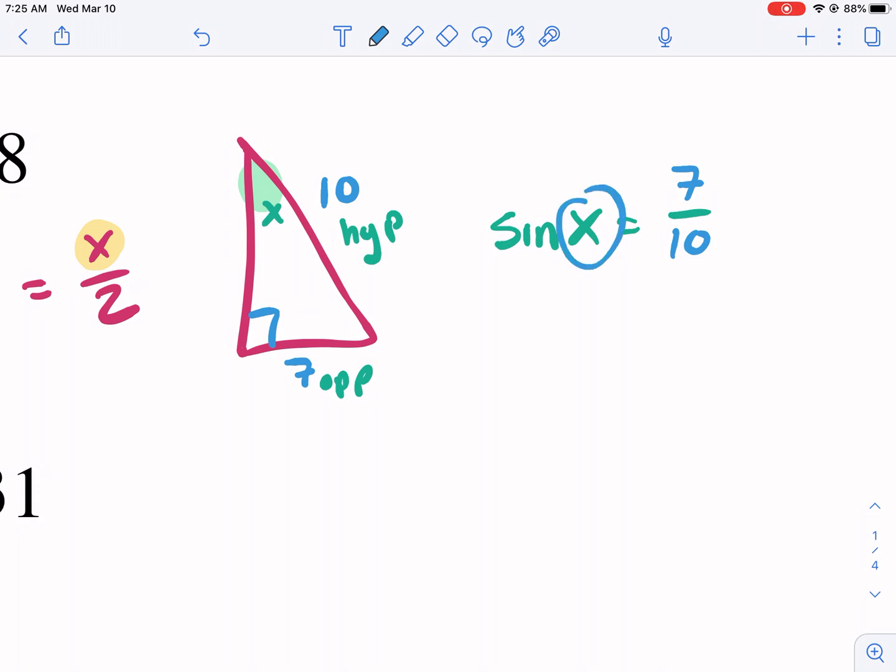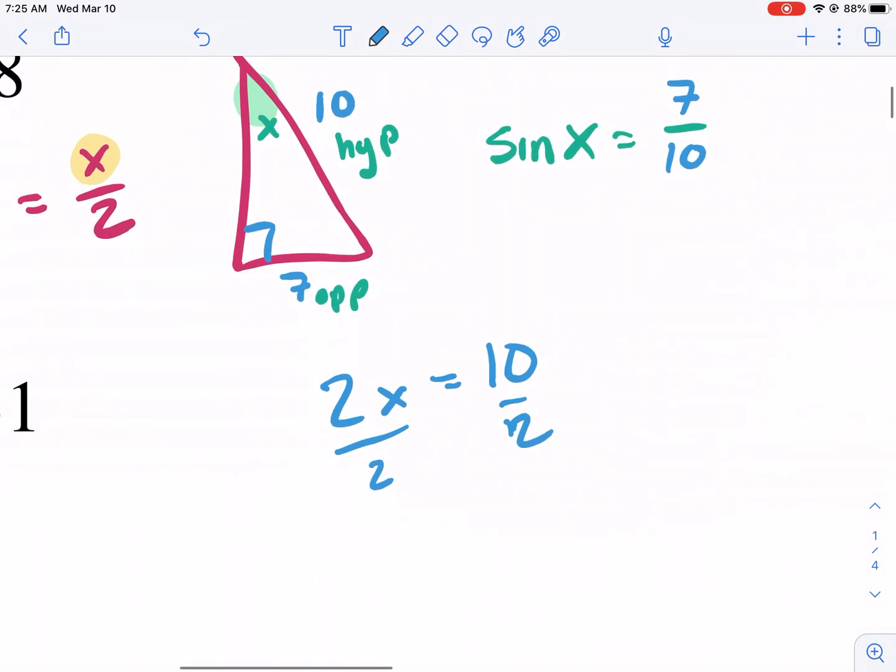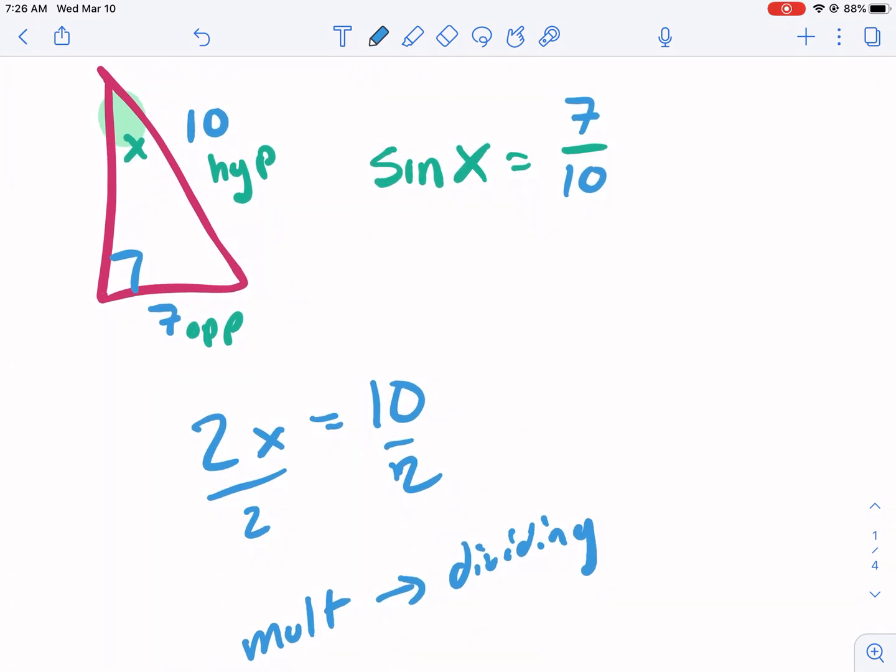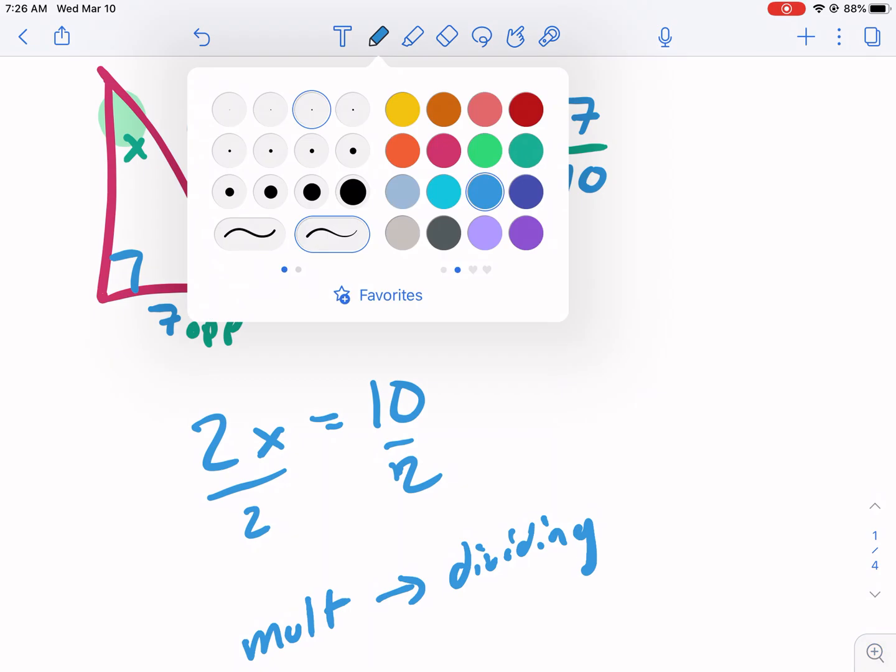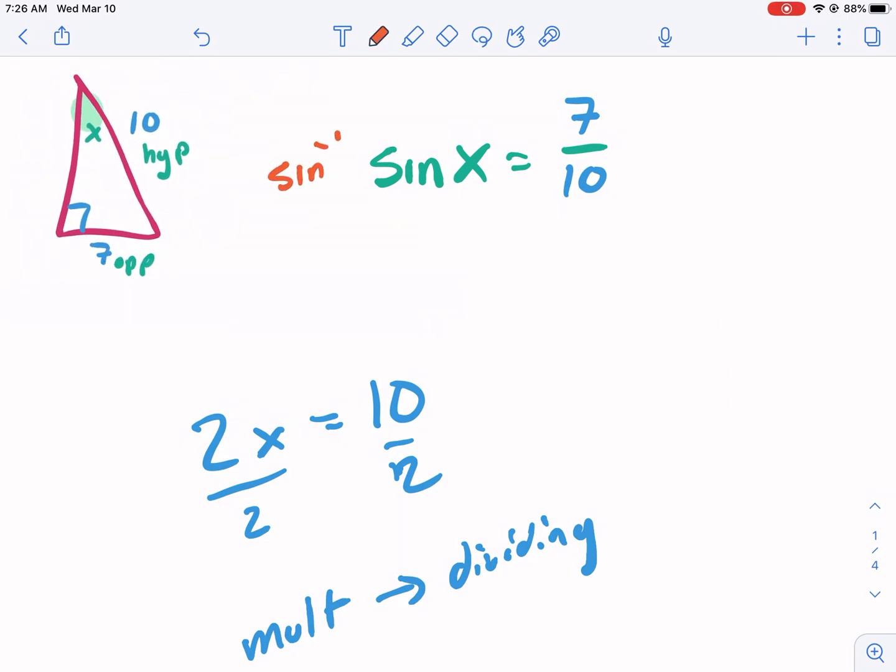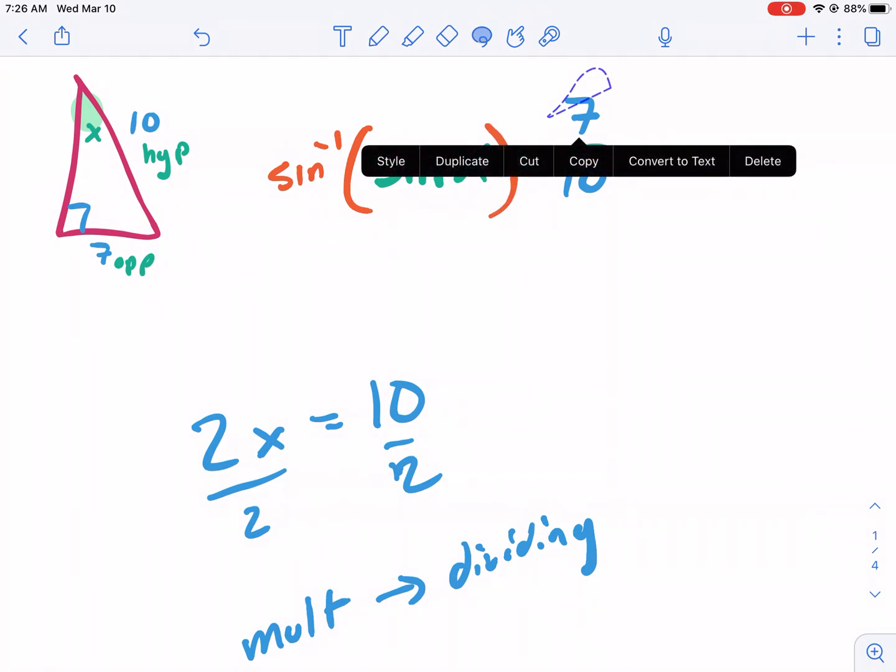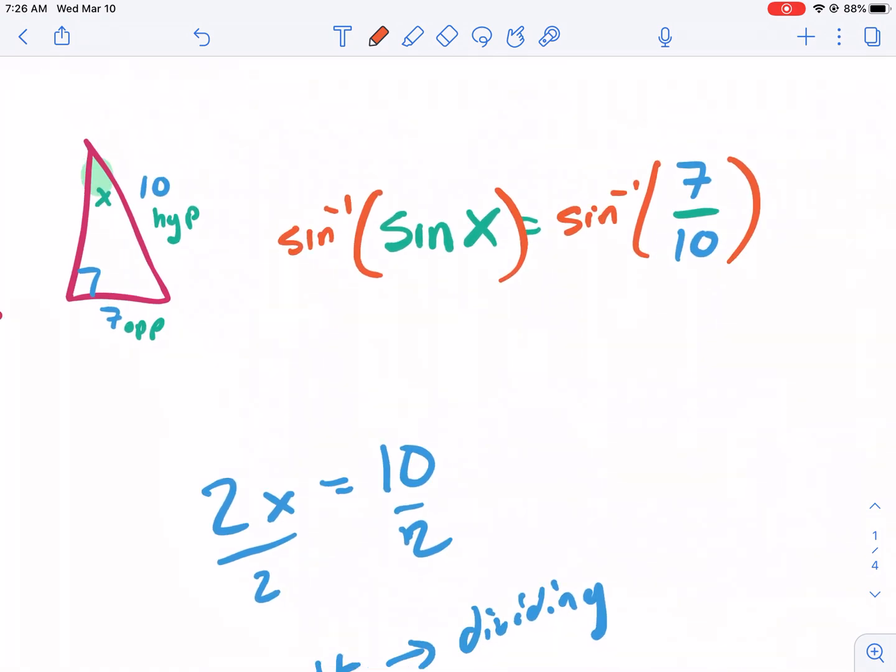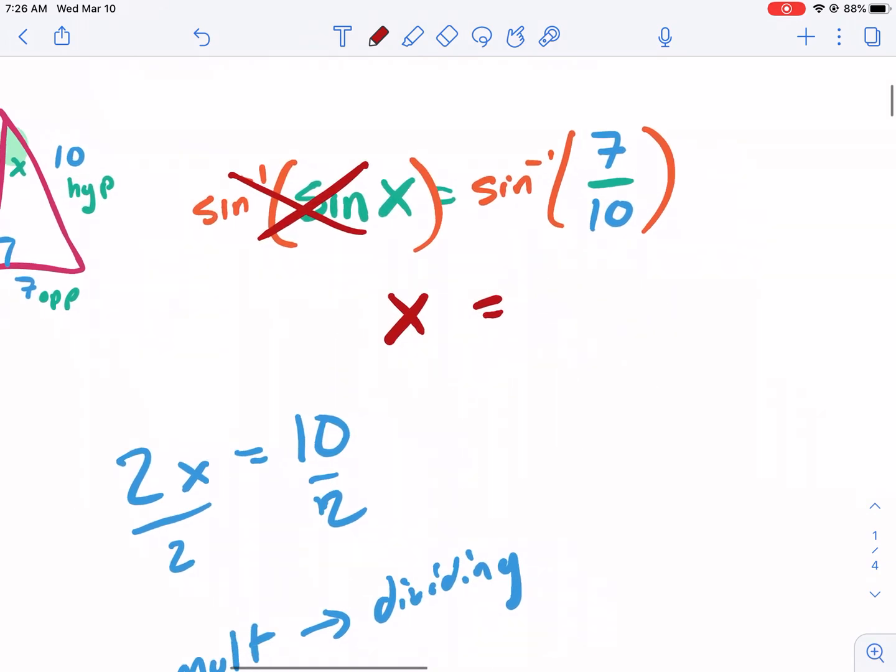Inverse trig is exactly the opposite. Imagine we have the side lengths. Let's say this is 10 and this is 7. And we want to know what is this angle right there, that mystery angle. We'll call it X. What we would do is say, I know this is my opposite side, this is my hypotenuse. So sine of X, that mystery angle, is equal to 7, my opposite side, divided by 10. So sine of X equals 7 over 10. So what do I do? How do I undo taking the sine of X?